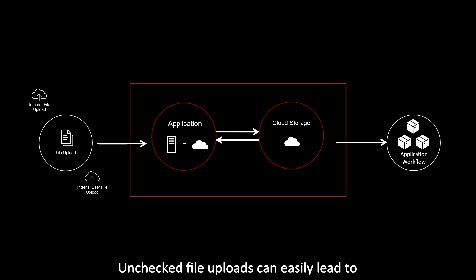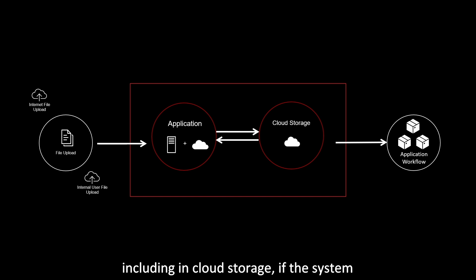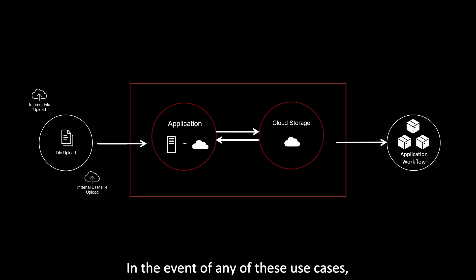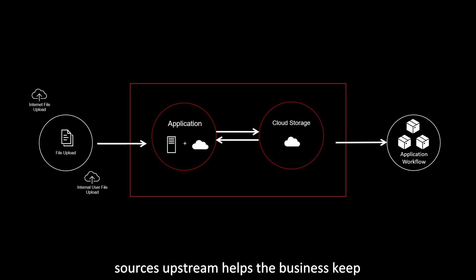Unchecked file uploads can easily lead to both server and client-side compromises, including in cloud storage, if the system in place lacks the means to detect malicious uploads. In the event of any of these use cases, enabling verification of initial object sources upstream helps the business keep up with best security practices.